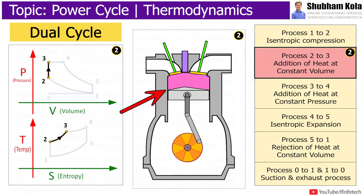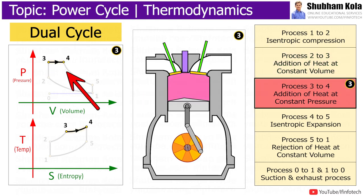After process 2 to 3, the remaining part of heat will be added at constant pressure in process 3 to 4. Here energy enters the system and part of work is done by moving piston and this is known as power stroke.